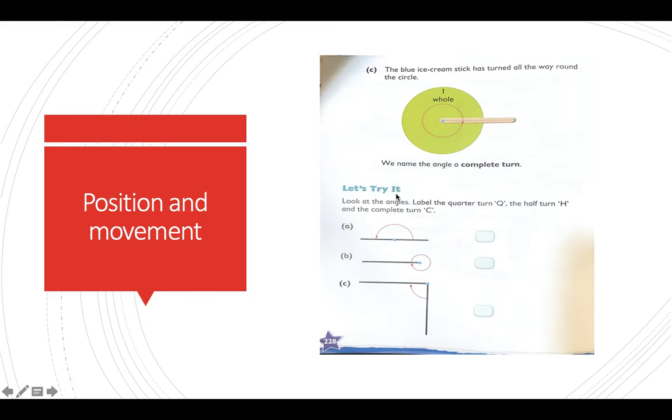Let's try it. Look at this angle. Label the quarter turn Q, the half turn H, and the complete turn C. Yes, I believe you have done it yourselves. This will be H, this will be C, and this will be Q.